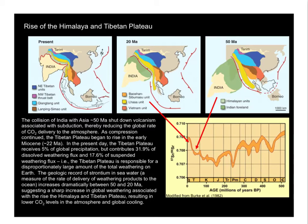This process appears to have started around 50 million years ago and lasted until at least around 20 million years ago. This shift is actually recorded in the strontium isotope ratios — a proxy for the rate of weathering on Earth. The rise in the strontium-87 to strontium-86 ratio appears to reflect primarily the increase in weathering rates associated with the rise of the Himalayas and the Tibetan Plateau.